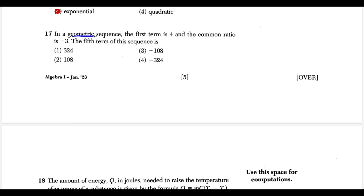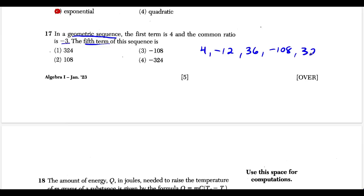Question seventeen: geometric sequence with first term four and common ratio negative three. Multiply by negative three each time: 4, then negative 12, then positive 36, then negative 108, then positive 324. The fifth term is 324, so choice one is our answer.